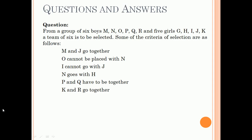Next topic is conditions and groupings. Here some conditions are given and we have to group the team based on those conditions. Now here is the question: From a group of six boys M, N, O, P, Q, and R, and five girls G, H, I, J, K, a team of six is to be selected.